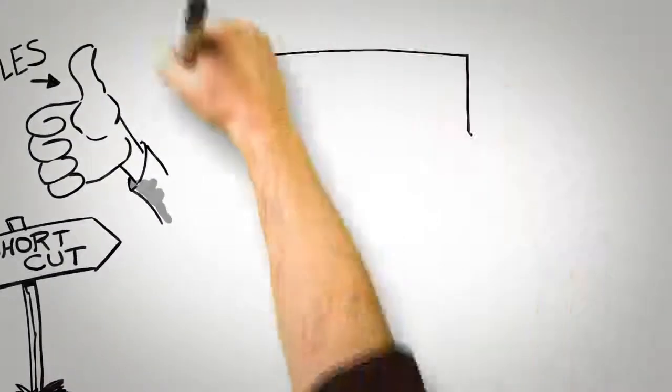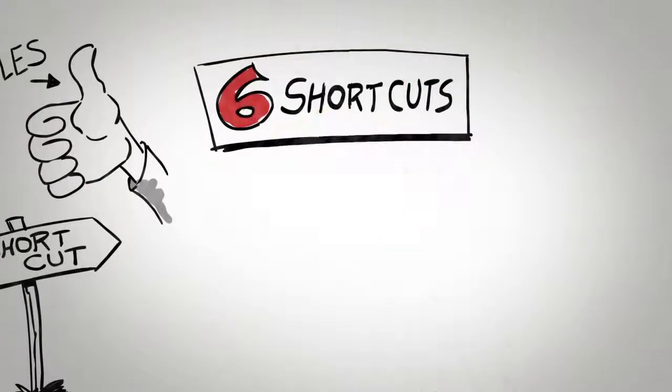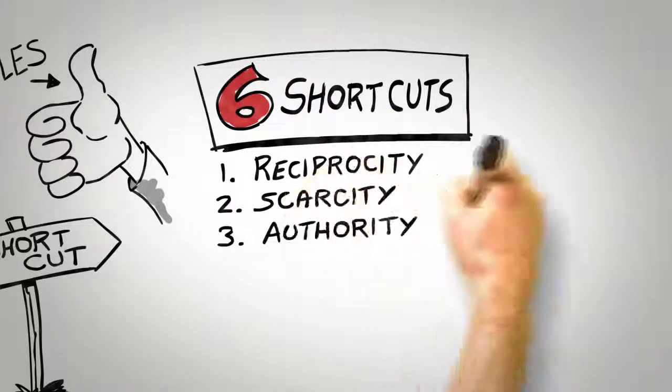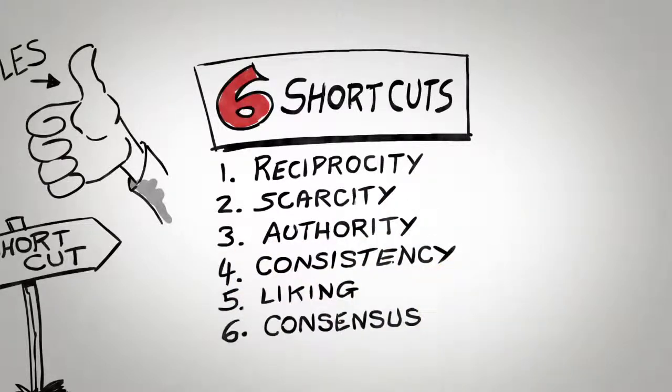My own research has identified just six of these shortcuts as universals that guide human behavior. They are reciprocity, scarcity, authority, consistency, liking, and consensus. Understanding these shortcuts and employing them in an ethical manner can significantly increase the chances that someone will be persuaded by your request. Let's take a closer look at each in turn.